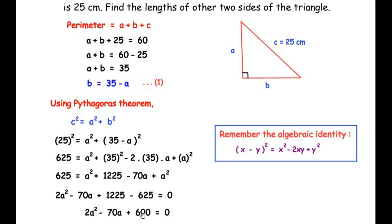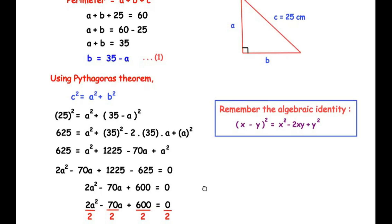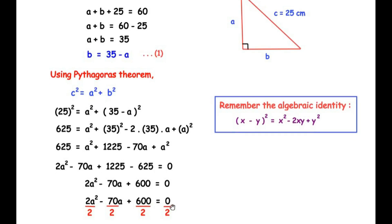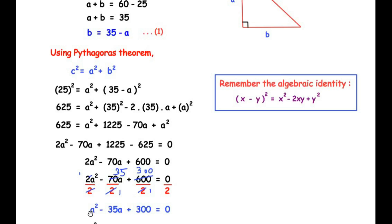We divide all terms by 2: a² − 35a + 300 = 0. This is our simplified quadratic equation.